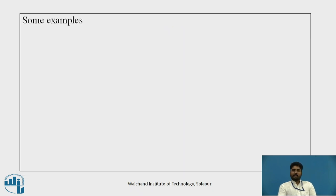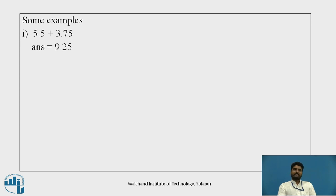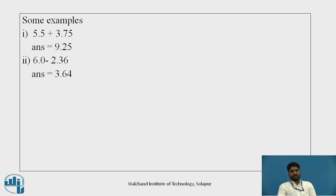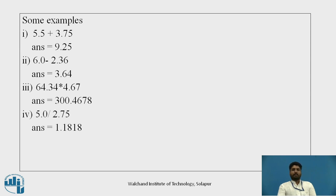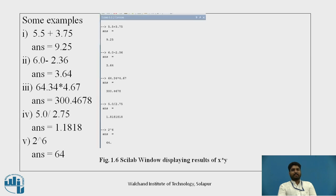Here are a few examples of how to use Scilab. For addition, typing 5.5 + 3.75 gives the answer 9.25. For subtraction, typing 6.0 - 2.36 gives the answer 3.64 — just type the expression and press enter to get the answer. Similarly, we can use the multiplication, division, and power operators. For example, typing 2 ^ 6 and pressing enter gives the answer 64. All these operations are very simple and easy as compared to traditional languages like C and C++.